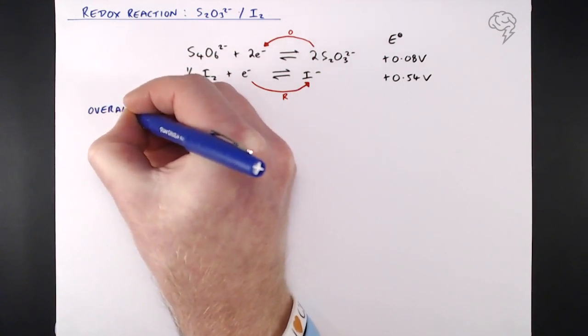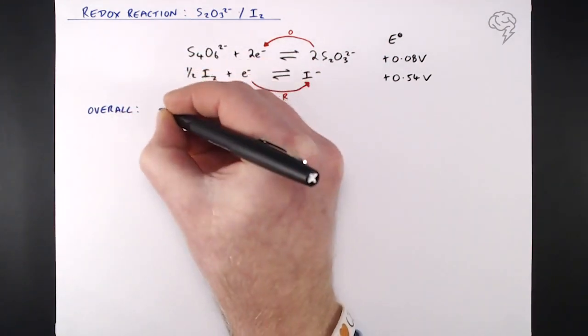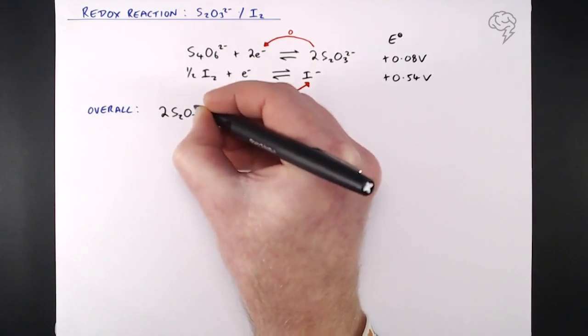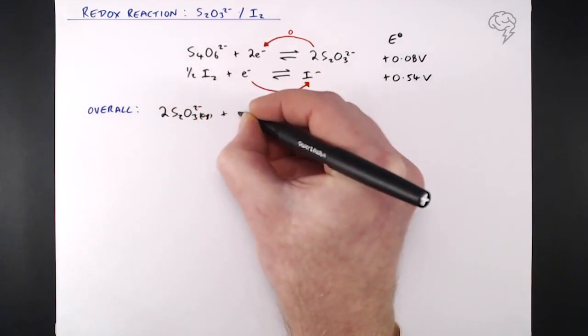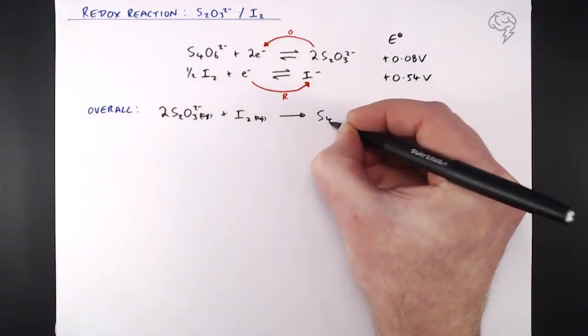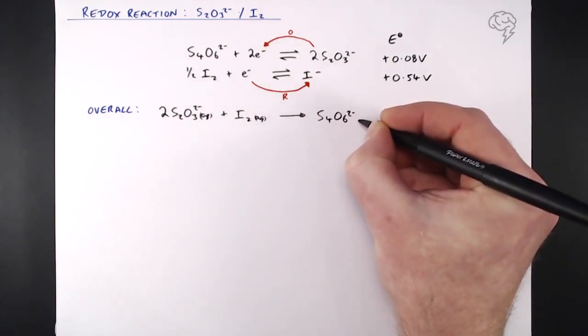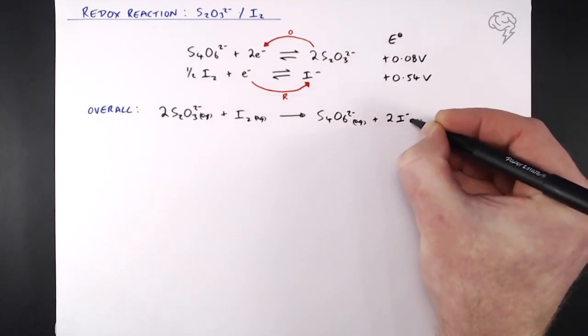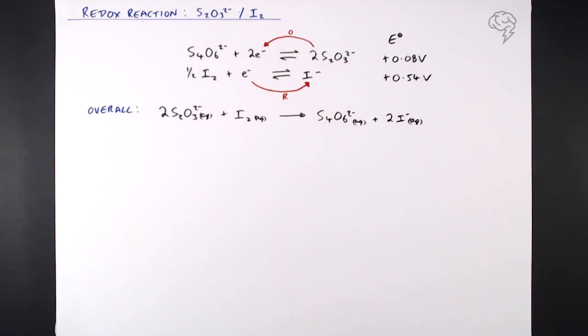So the overall equation here is two S2O3 2- plus a full I2. Why is it a full I2? Because I've had to double everything in that half equation to get the two electrons I need to balance that equation out. So two S2O3 2- plus I2 gives us S4O6 2- and two iodide ions. That is the full equation for this redox reaction.